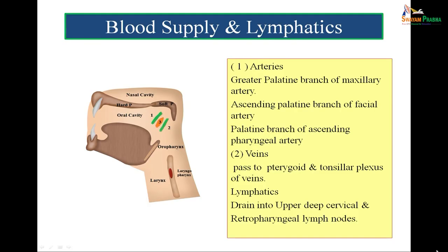The blood supply to the soft palate comes from the greater palatine branch of the maxillary artery, the ascending palatine branch of the facial artery, and the palatine branch of the ascending pharyngeal artery. Veins pass to the pterygoid and tonsillar plexus of veins. Lymphatics drain into the upper deep cervical and retropharyngeal lymph nodes. The soft palate has a good blood supply and is richly supplied by lymphatics.